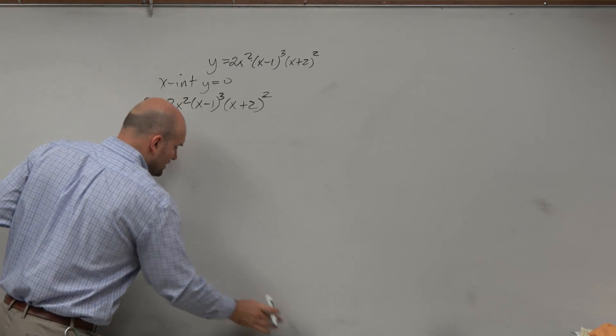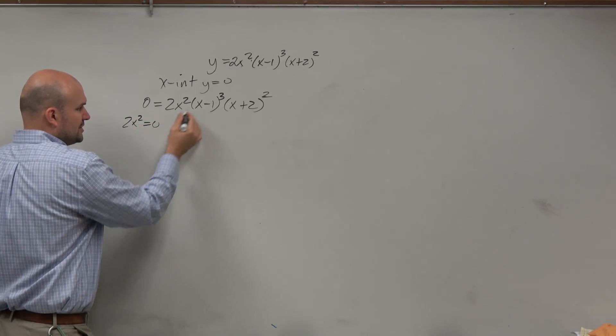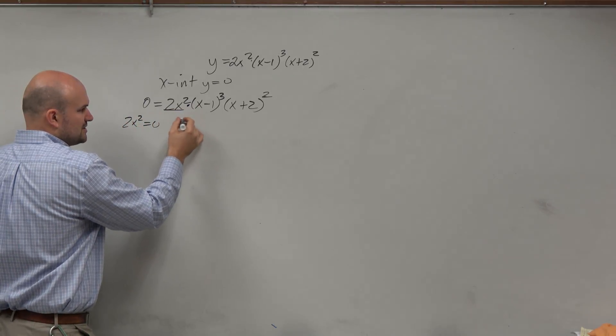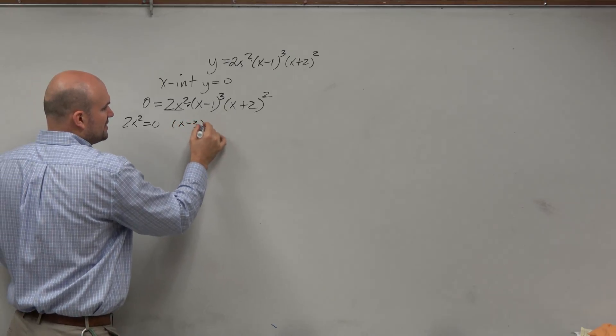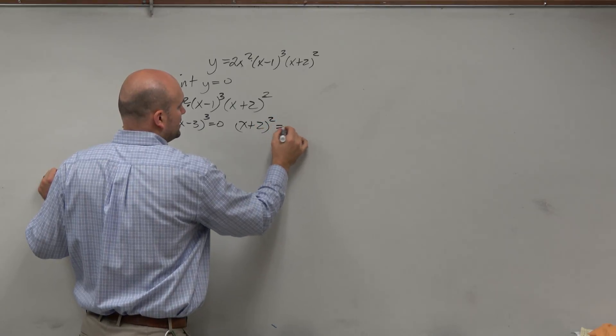So I'll group the 2 as a constant with the x². So I'll say 2x² can equal 0, so I'll set that as its own expression. Then I have (x-3)³ equals 0, and then I have (x+2)² equals 0.